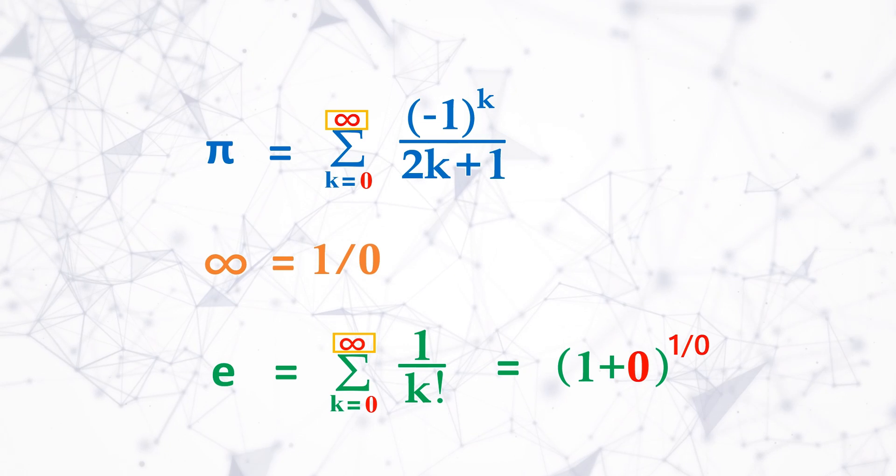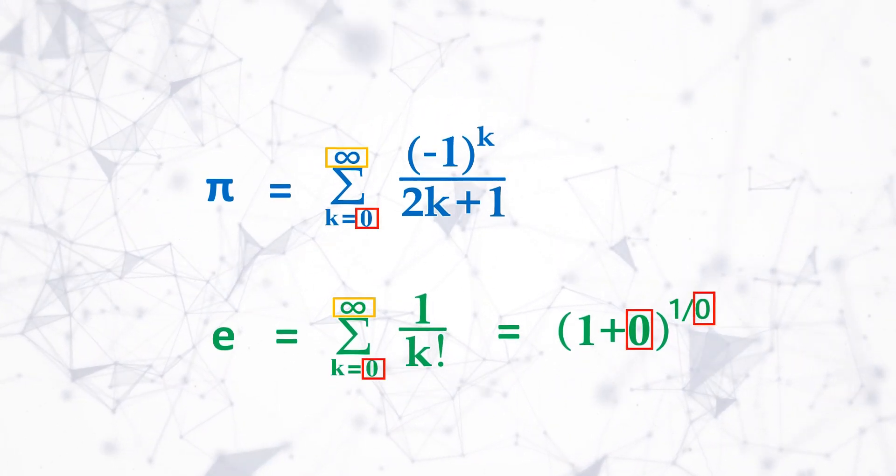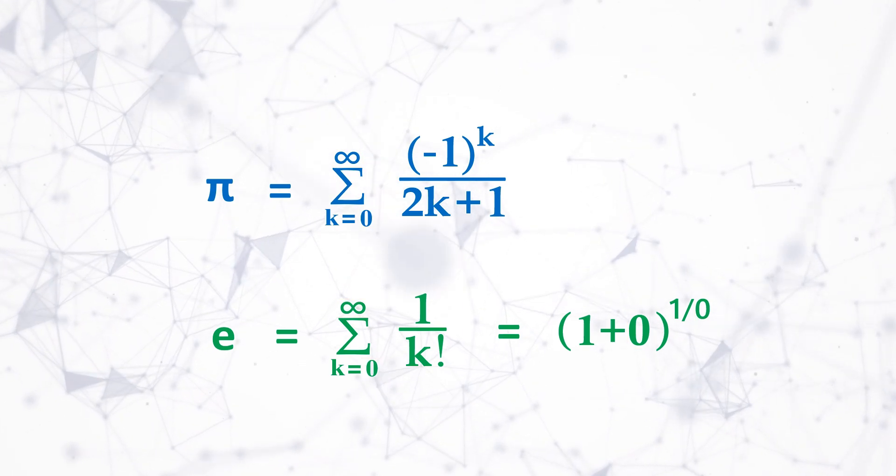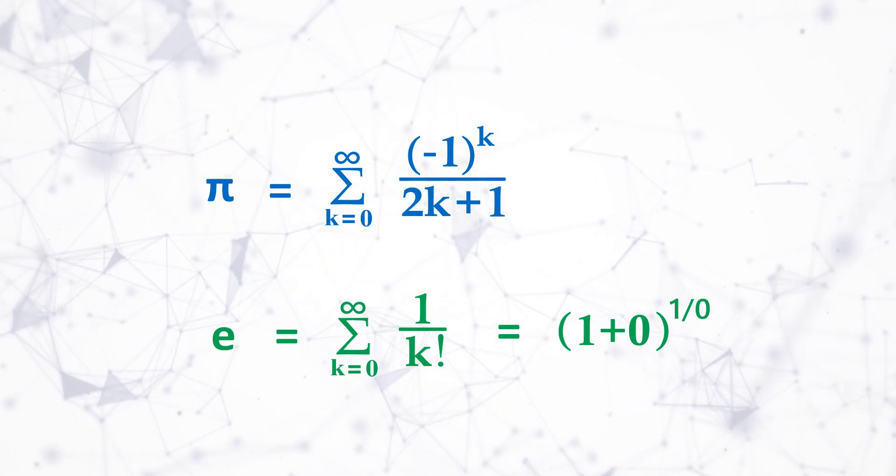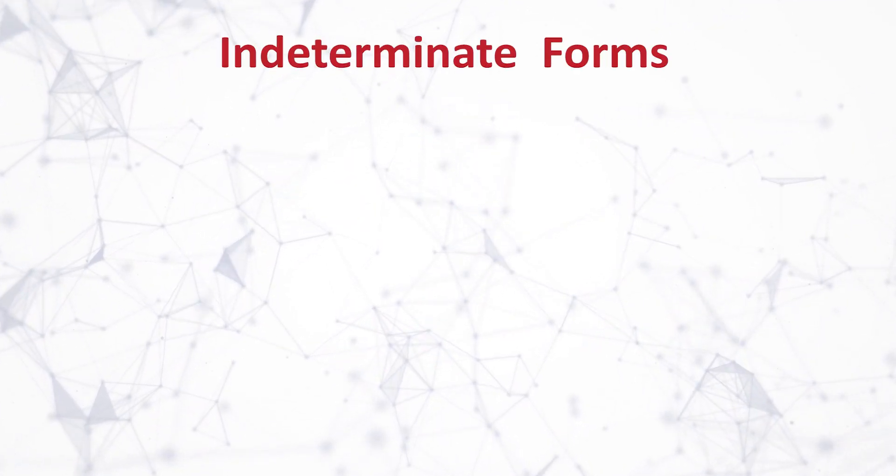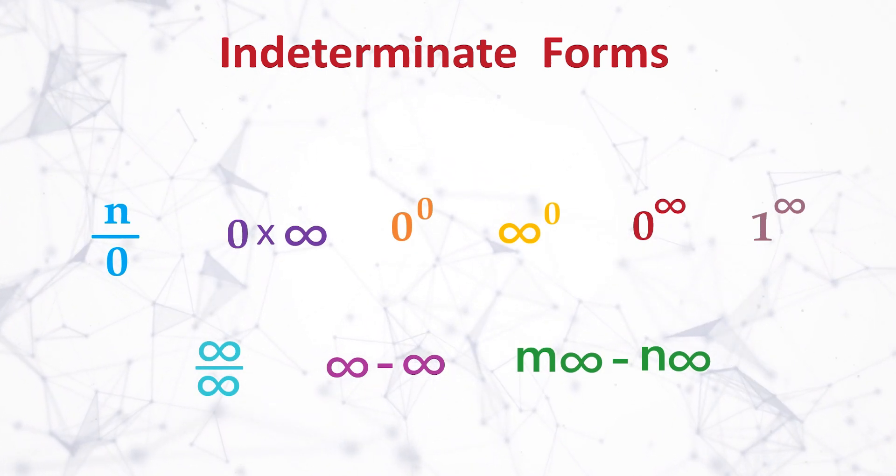And surprisingly operations with 0 and infinity are not fully functional in real number system. But all operations are functional in universal number system. The well-known common operations that are non-functional are categorized as indeterminate forms in real numbers. And note that these are forms and not specific cases.